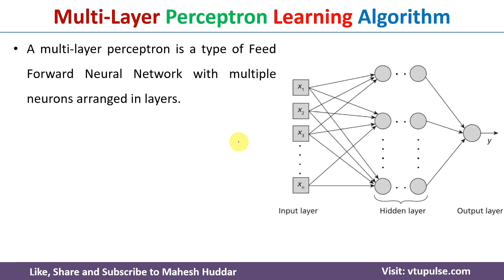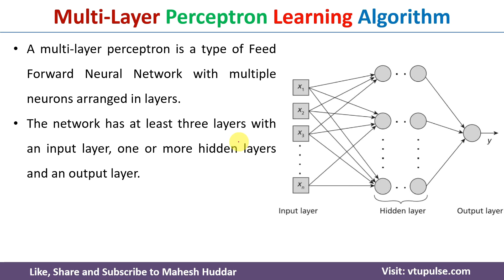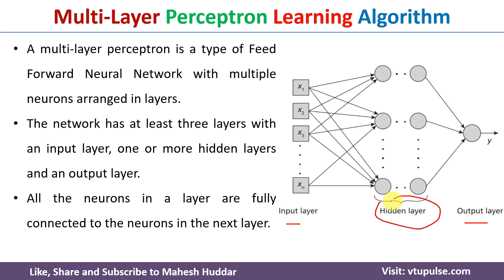Multilayer perceptron is a type of feedforward neural network with multiple neurons arranged in different layers. There will be at least three layers: the input layer, the output layer, and one or more hidden layers. Each neuron in a particular layer is fully connected with each of the neurons in the next layer. For example, x1 is connected with each neuron in the next layer, and similarly every other neuron connects to all neurons in the following layer.